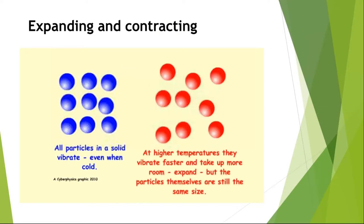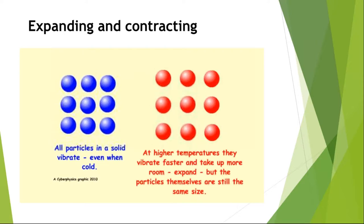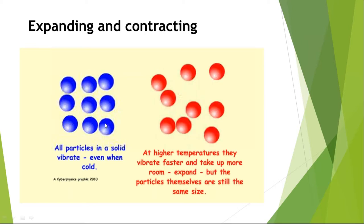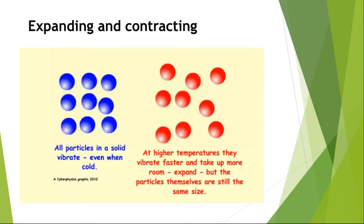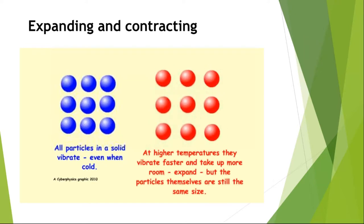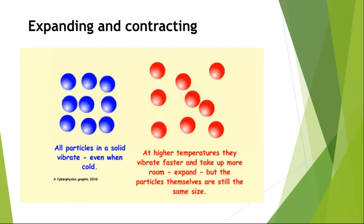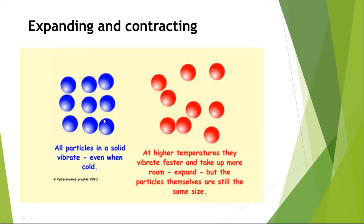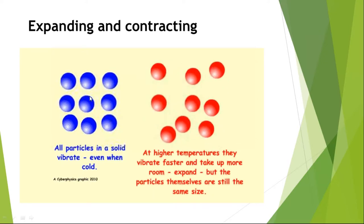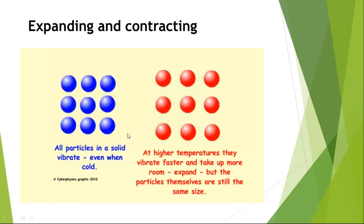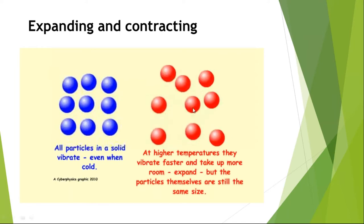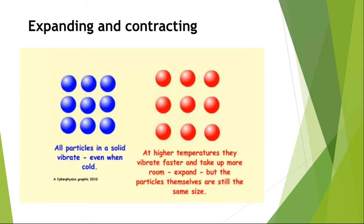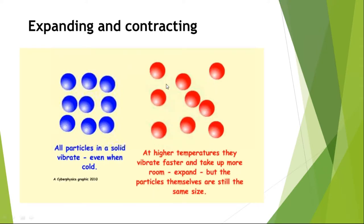Expanding and contracting — what do they mean? In the first animation, you see the particles inside a solid. It doesn't matter if the solid material has a higher or lower temperature — all substances always have particles in motion. If we give heat energy and increase the temperature, the particles start to vibrate too fast. While they vibrate too fast, they want to get more space, and their volume will increase. This process is called expanding — expanding happens when the substance's temperature increases.